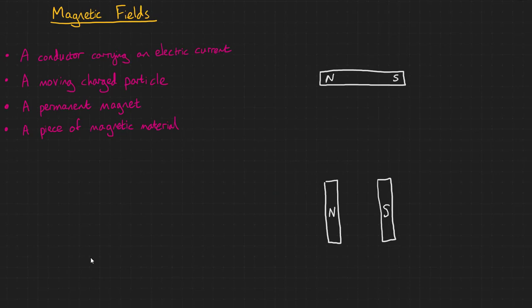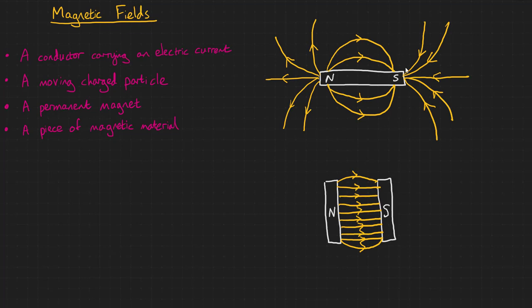We can draw magnetic field patterns in a similar way to gravitational and electric field patterns. Lines will always go from north to south, and the density of the lines represents the strength of the magnetic field.